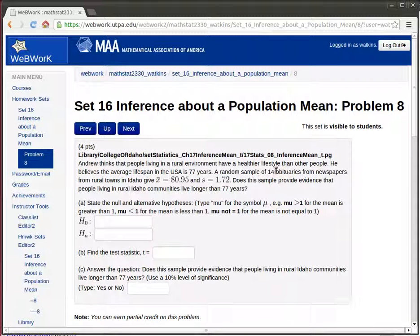But a random sample of 14 obituaries from a newspaper from a rural town shows that the average of those 14 people lived to be 88.95 years with a standard deviation of 1.72. So the question is, does this support his hypothesis? Let's look and see what's happening here.